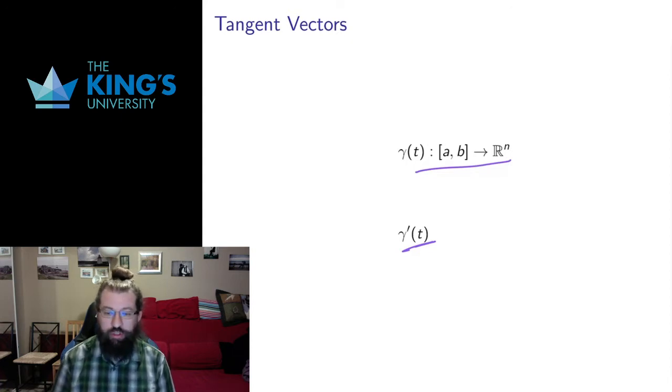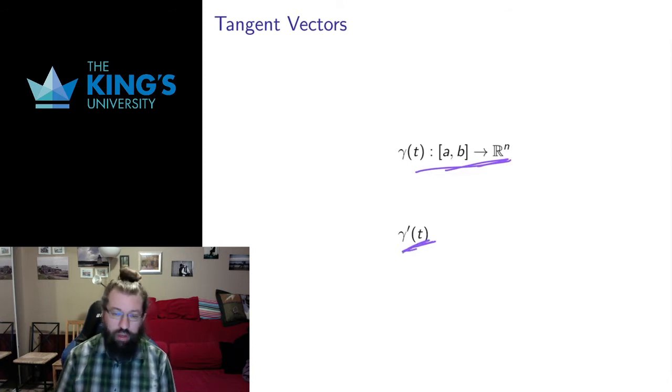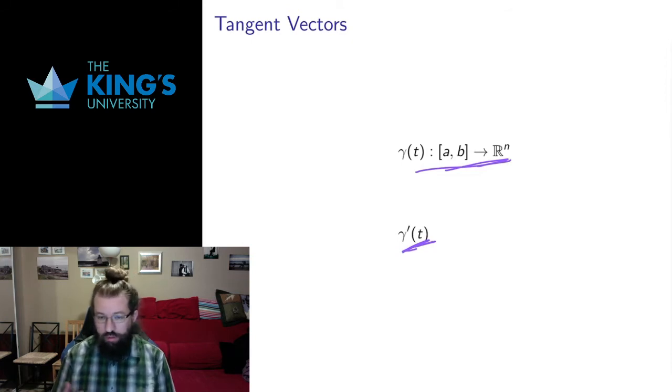it no longer represents the slope of a tangent line, it now represents a tangent vector because since the output of gamma is a vector, the output of its derivative is also going to be a vector, just the derivative in each of the coordinates.